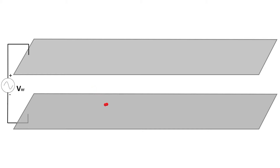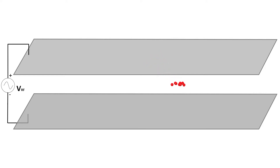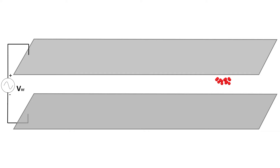These electrons can then be accelerated by the applied RF field and impact with that same or a different surface. When the impact energies, the number of electrons released, and the timing of the impacts are such that a sustained multiplication of the number of electrons occurs, the phenomenon will grow exponentially.